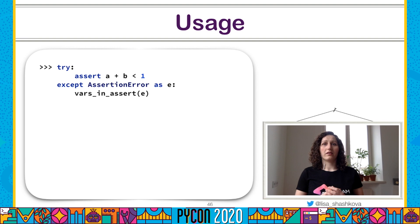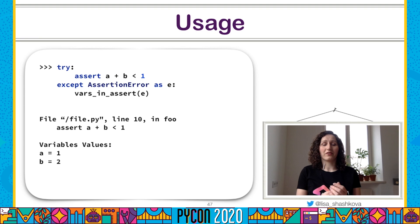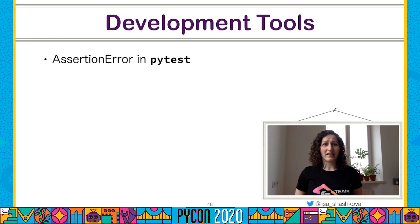We can use our function during exception handling by passing the exception object to it, and it will print variable values to the output — even without PyTest. This can be very helpful for logging: if a stack trace isn't enough, you can automatically log all variable values used inside a failed assertion. And of course, it can be extended to any other exception type. As you can see, with knowledge about Python runtime, you can create really cool tools. Our function is much less powerful than what's implemented in pytest, but the main idea is very similar.